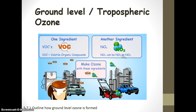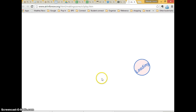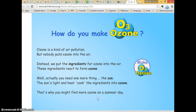The other ingredient is nitrogen oxides such as nitrogen dioxide, emitted from industry, vehicles, and burning fossil fuels, but also from small powered appliances like lawnmowers, snow blowers, and leaf blowers. When these two ingredients combine in the presence of sunlight, they make ozone.